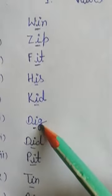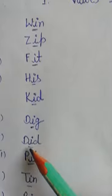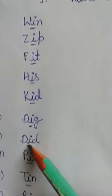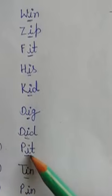D, I, G - Dig, वो दिया है. D, I, D - Did, वो दिया है. P, I, T - Pit.